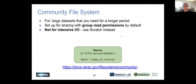The community file system is meant for large datasets that you need for a longer period of time. These are group-readable by default. It says it's not for intensive IO, but it still has about 150 gigabytes per second in terms of data rate, so it's still pretty fast — just not five terabytes per second. Depending on your space needs, you could run out of CFS instead of Scratch if you really need a lot of space.